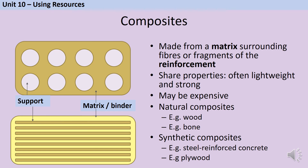Another example is plywood, made from very thin layers of wood held together with glue. The wood layers are the reinforcement, providing the main structure and strength, while the glue is the matrix or binder, holding the whole thing together and also making it lighter than if we were using solid wood.